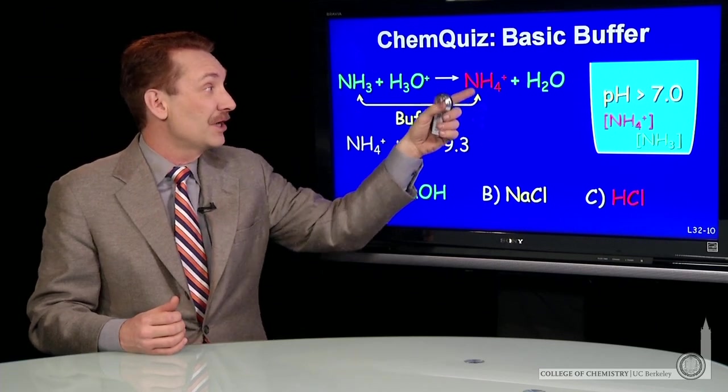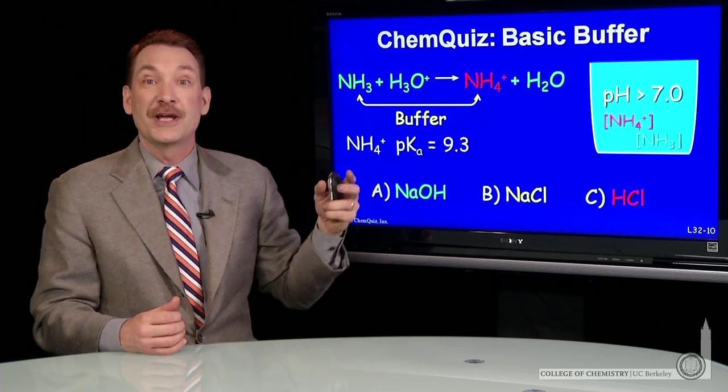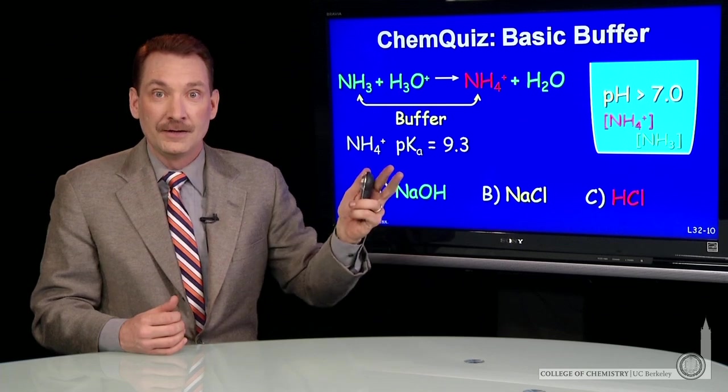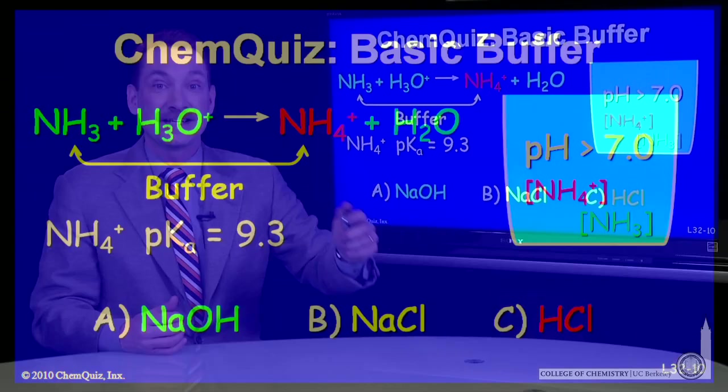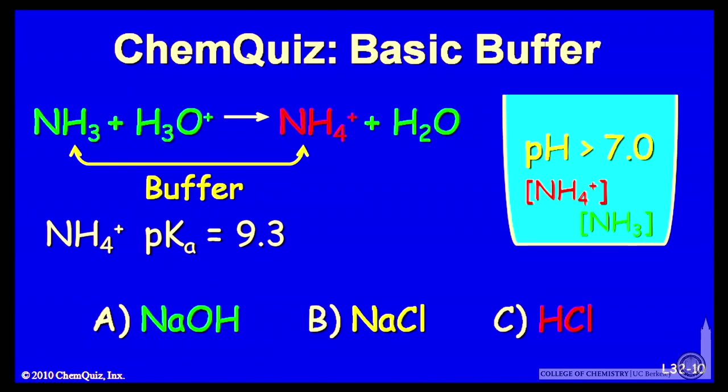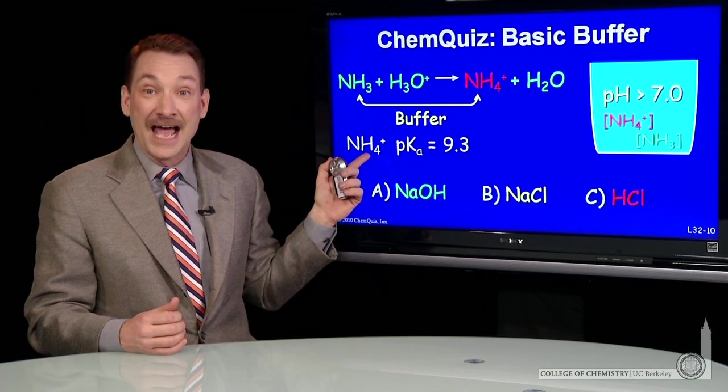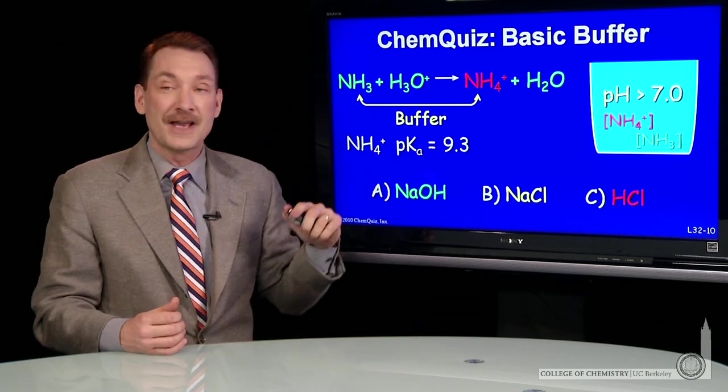That would form the buffer. The buffer would be where the concentrations of NH4 plus and NH3 are about equal concentrations of an acid and its conjugate base. And the pH will be around the pKa of the acid involved. So the pKa of the acid, NH4 plus, is 9.3.